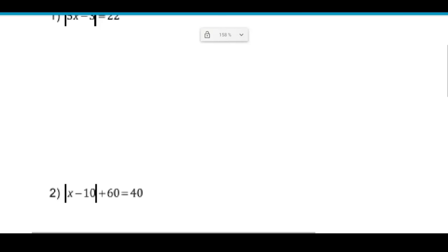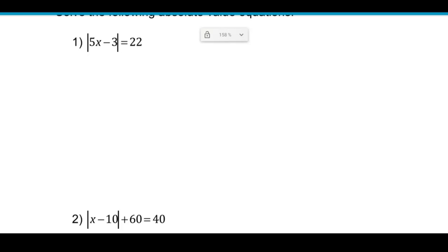With absolute value equations we have two cases to consider because absolute value bars turn anything that's in them positive. So anytime we have absolute value equations we're going to split it into two. The first thing you always have to do is isolate the absolute value quantity. So in this case it's already alone, absolute value by itself equals something else. So we're going to split right into our two cases.